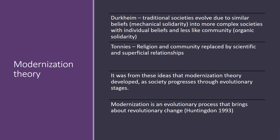Functionalism is often seen as a staid and stable theory, but theorists such as Durkheim proposed that societies will evolve. They would say that societies evolve because they have similar beliefs, and they will evolve into more complex societies where individuals start to have their own beliefs, and society becomes less based on community and more based upon individualism. Ferdinand Tönnies, a key functionalist theorist, suggested that religion and community will eventually be replaced by scientific and superficial relations — and to a certain extent, Tönnies is actually right.